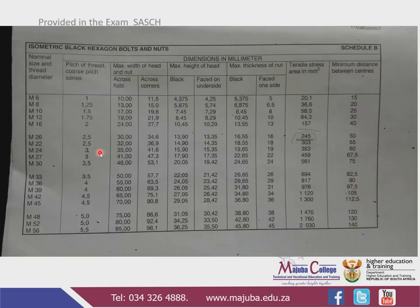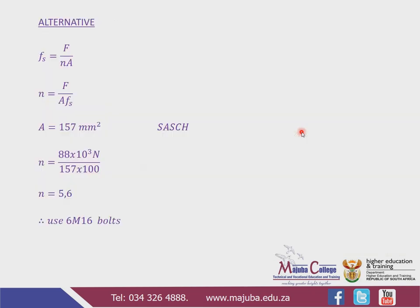We go back to the same SASCH table. In the first column we find M16, then go across to the stress area column. The stress area for M16 is 157 mm². So area equals 157 mm².